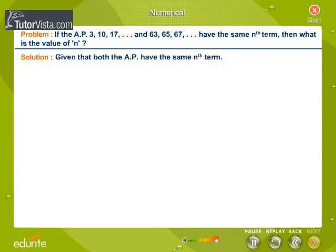We are given that both the APs have the same nth term. Therefore 7n minus 4 equals 61 plus 2n. This implies 7n minus 2n equals 61 plus 4. Now calculate the value of n.